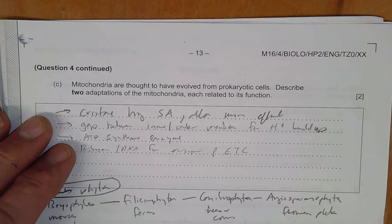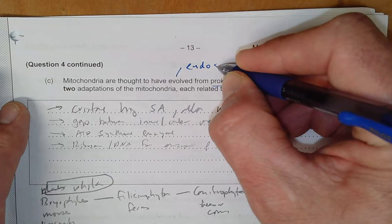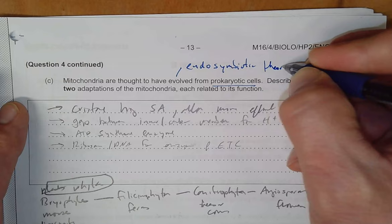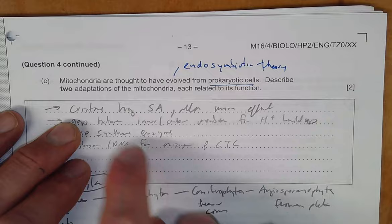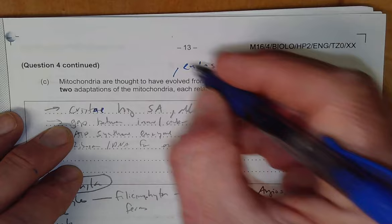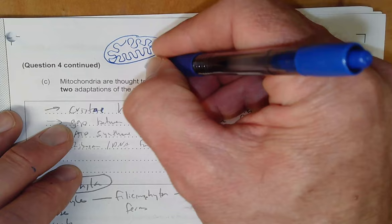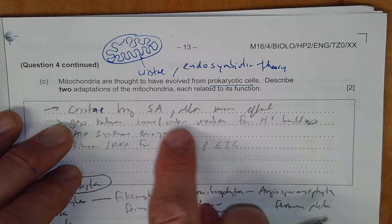Mitochondria evolved from prokaryotic cells—that's the endosymbiotic theory. Two adaptations that help relate to its function: one is the cristae, those finger-like projections in the mitochondria. This is the mitochondria, these are the cristae, all these little bumps. That really increases surface area and it makes it more efficient.